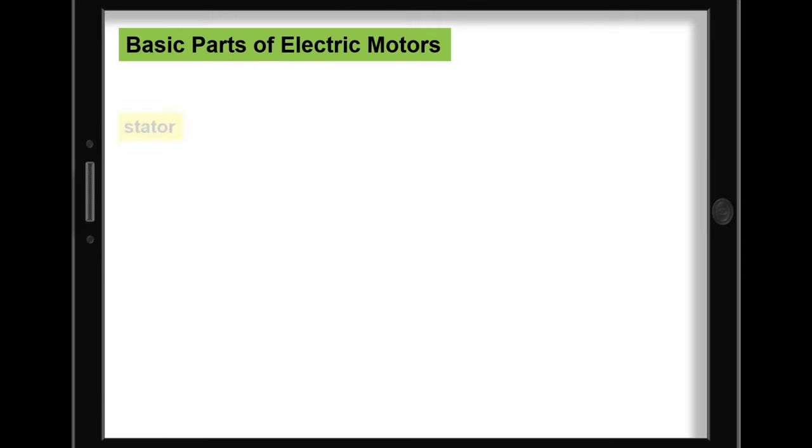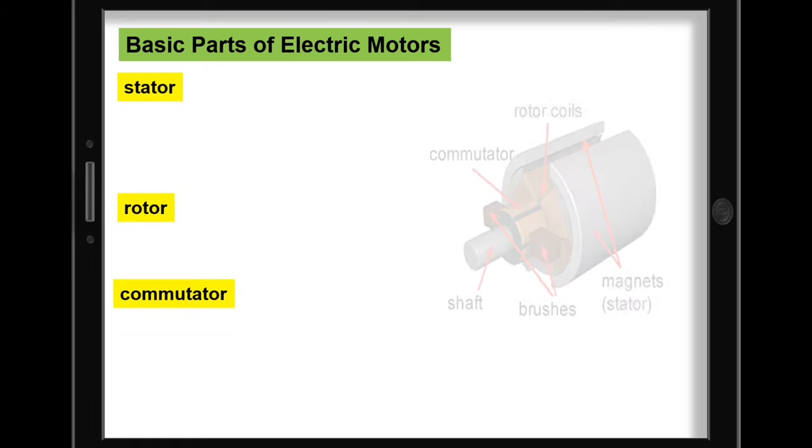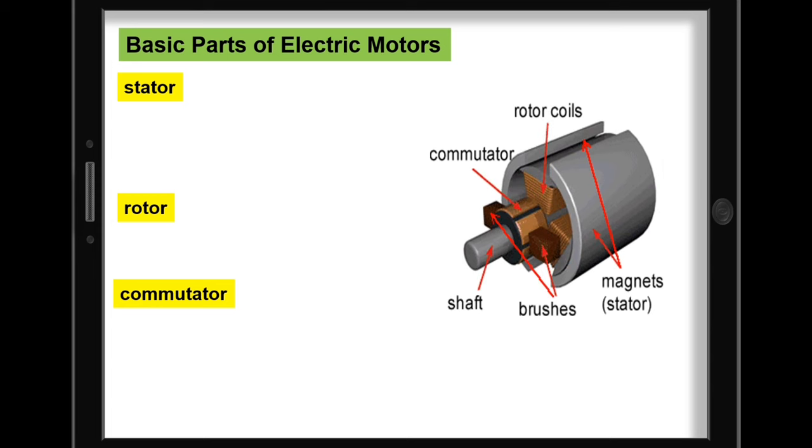In general, electric motors have three main parts: a stator, a rotor, and a commutator. These three parts use the attractive and repulsive forces of electromagnetism, causing the motor to spin continually as long as it receives a steady flow of electric current.